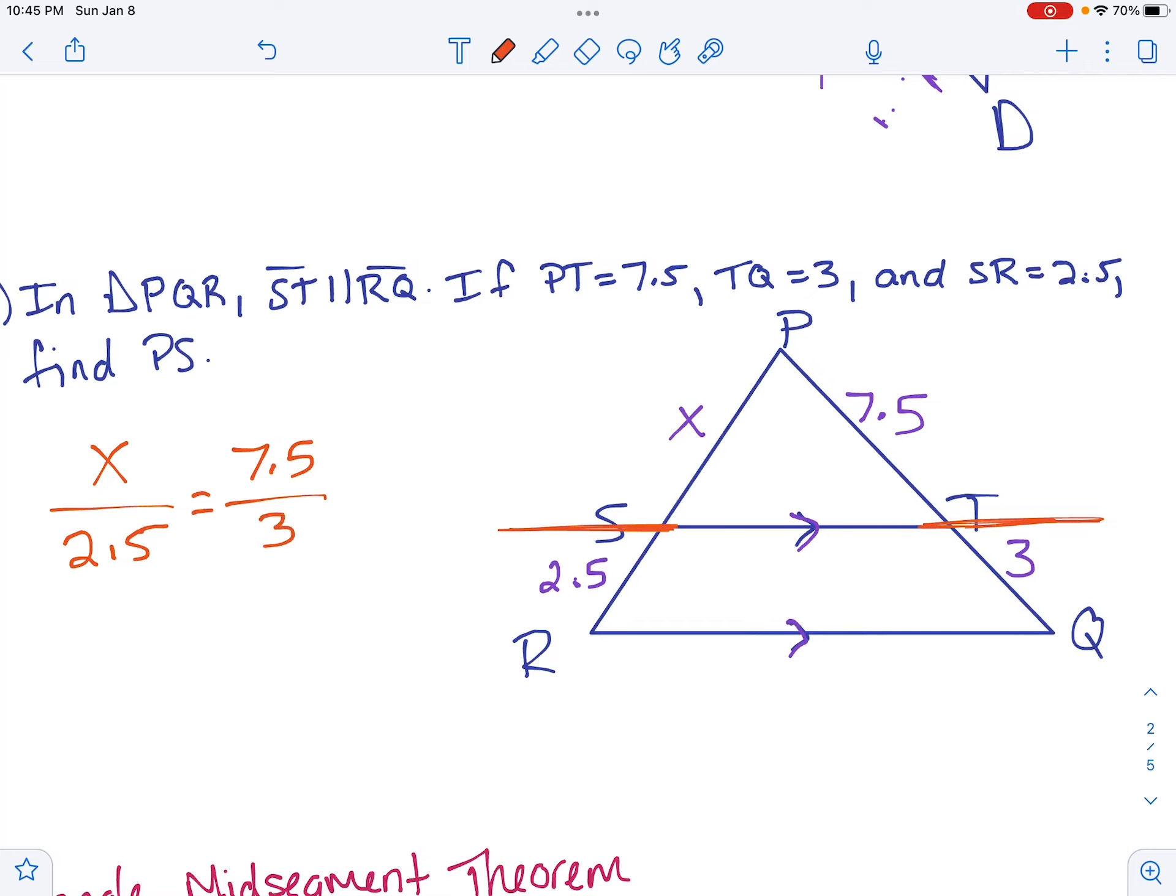From there, we've got our fraction set up. We can go ahead and cross-multiply. So we have X times 3 is 3X, and then we have 2.5 times 7.5, which is 18.75. To get X alone, we're going to divide each side by 3 to get X equals 6.25, and that would be our missing side length.